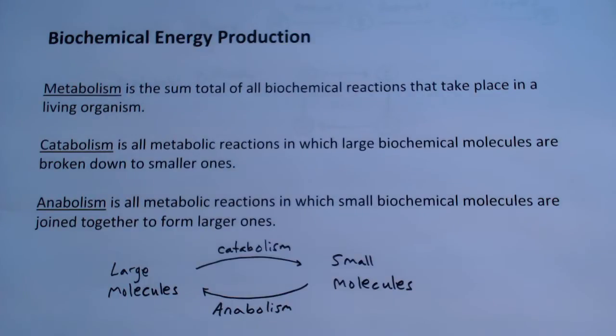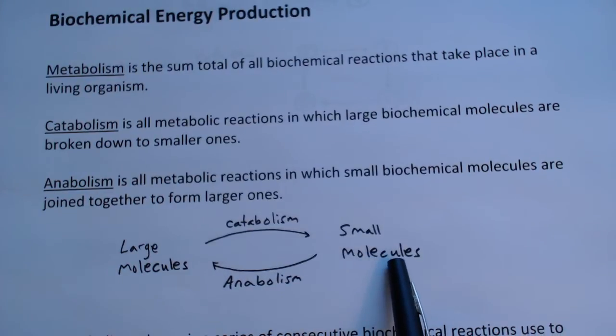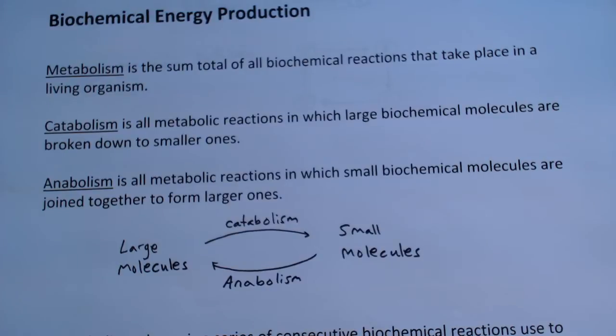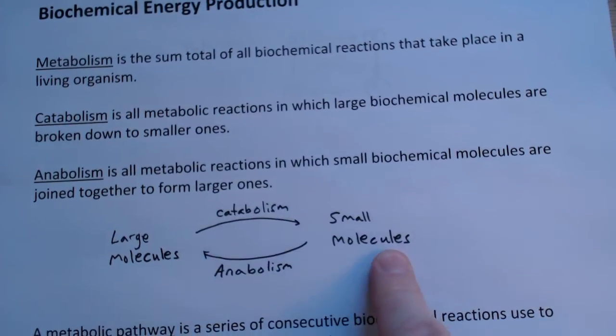Anabolism is all metabolic reactions in which small biochemical molecules are joined together to form larger ones. So we have large molecules that are broken down by catabolism to small molecules, and small molecules can then be built back up into large molecules with anabolism.